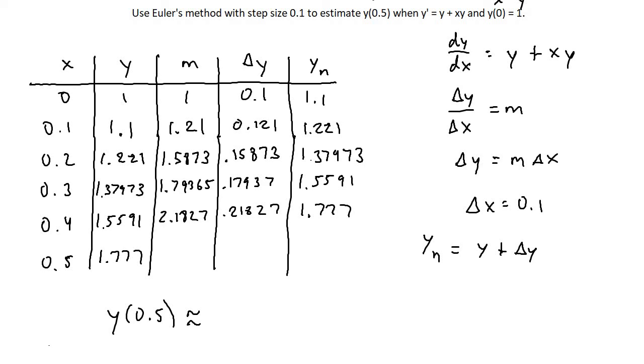My final answer when I estimated when x is equal to 0.5, what y will equal, I get around 1.777. If you had a consistent rounding, you probably had something close but not exactly to what I had, but it should be something close to this number because this is just an approximation. Euler's method is just an approximation, and it gives you not an exact idea, but a pretty good idea of what the solution should be around.